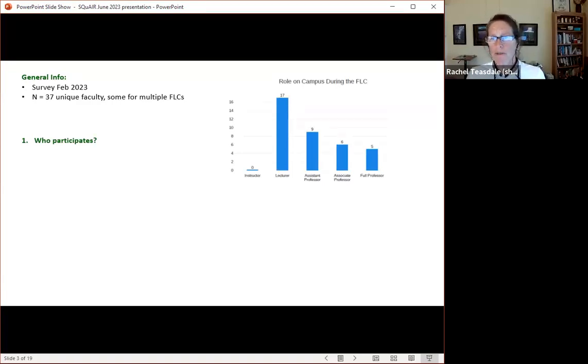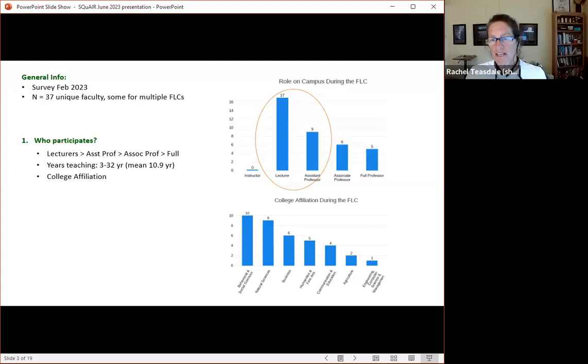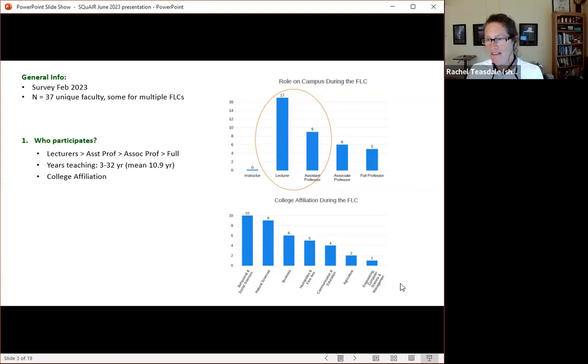So who participates? It's largely lecturers and assistant professors and some associate and full professors. The number of years teaching ranged from three to 32, so literally all over the place, and the mean was about 11 years. For college affiliation, primarily behavioral and social sciences. We have this problem engaging our engineering faculty, and that's something I'd really like to talk to other people about.